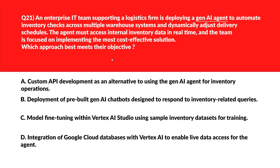Let's look at this question. We'll first look at Option A. Option A says custom API development as an alternative to using a gen AI agent for inventory operations. Custom API adds development overhead without leveraging gen AI agent capabilities. That means Option A is incorrect.